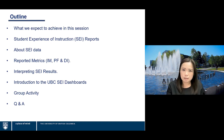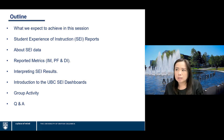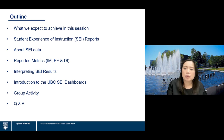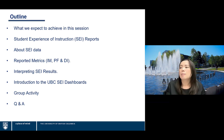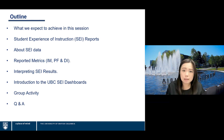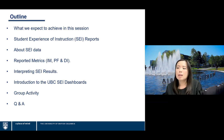I'll start with an outline of today's session. We'll begin with what we expect to achieve, then get into details of what we currently provide in the Student Experience of Instruction reports, dive into the data, and discuss the reported metrics: IM (Interpolated Median), PF (Percent Favorable), and DI (Dispersion Index). We'll also cover how to interpret SAI results, a live demo of the SAI dashboard we've developed over the last two years, a group activity, and then we'll stop recording before the Q&A.